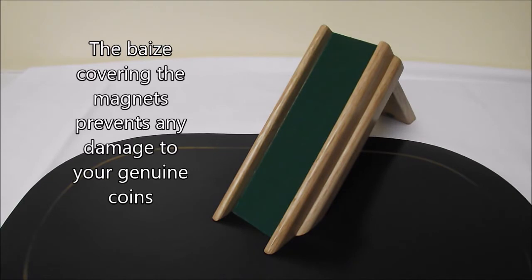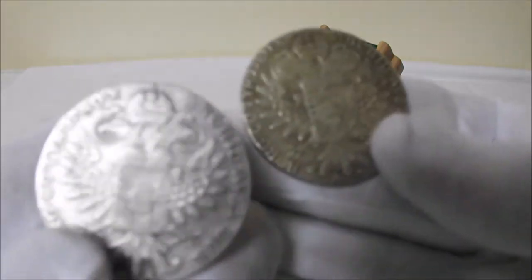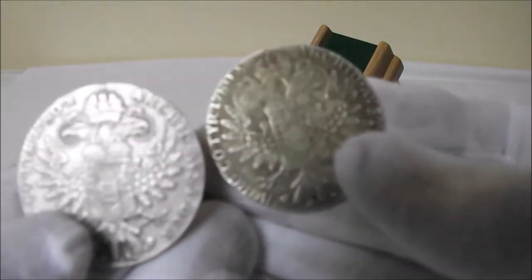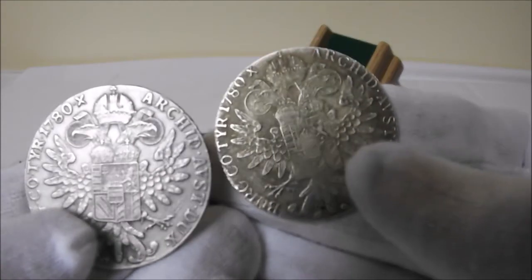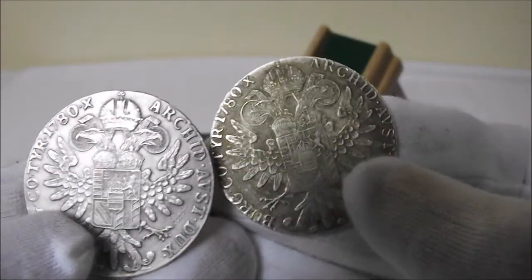Now you don't have to be testing 999 or 925 coins. For example, I have two Austrian Talas here which are 0.833. One of those is genuine and the other is counterfeit.